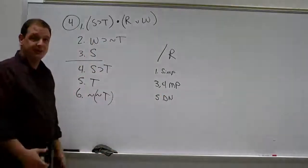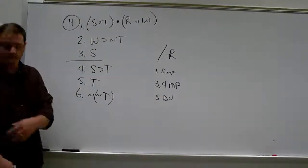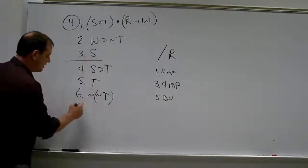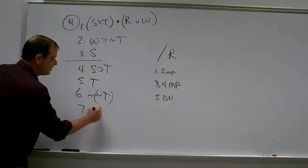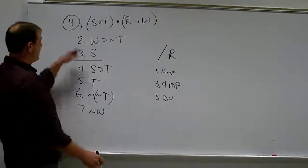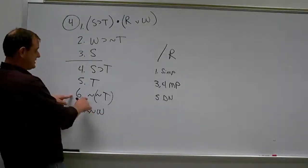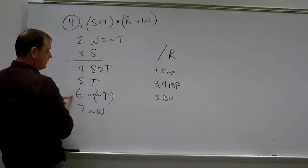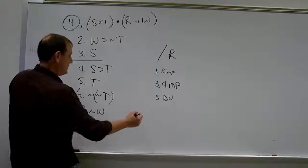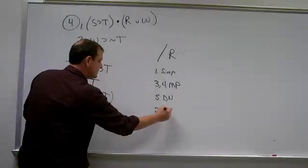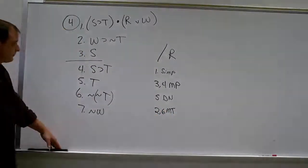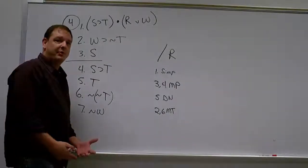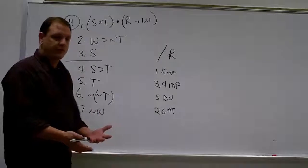So that will set us up for modus tollens. And we use that double negation rule. Next on the list, I suppose we can go ahead and do our modus tollens and conclude that W is false by lines 2 and 6, right? Because 6 tells us that the consequence of 2 is false. 2, 6, modus tollens. We're getting there. We're getting there. We're actually really only one step away if we didn't have to use all these weird rules in the meantime.